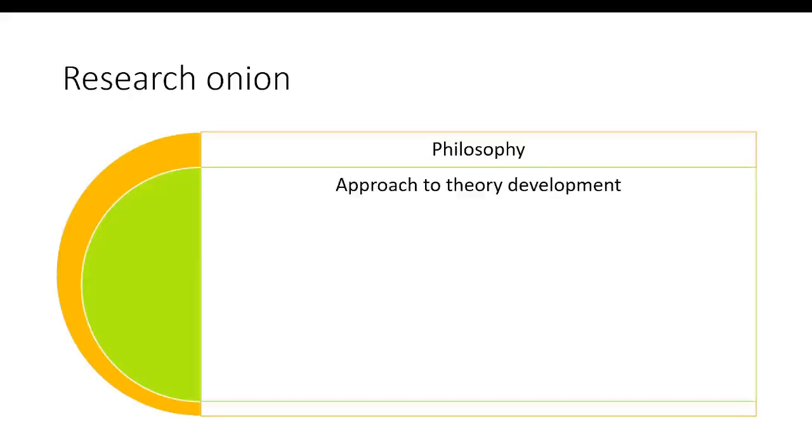The next level within the Research Onion is the approach to theory development. Now again I'll talk about the two extremes. One is deductive approach and the other one is called inductive approach.